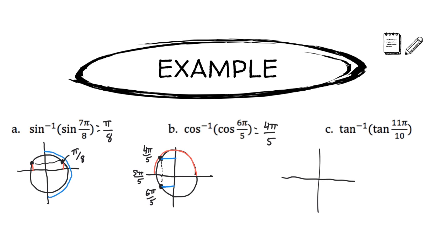Lastly, find tan inverse of tan of 11 pi over 10. Drawing a unit circle — remember, tangent is slope — and the answer must be between negative pi over 2 and pi over 2. The angle 11 pi over 10 is just a little bit bigger than pi. Finding the slope of the line through that point and extending it to the other side lands in the valid range. The reference angle for 11 pi over 10 is pi over 10, so the answer is pi over 10.